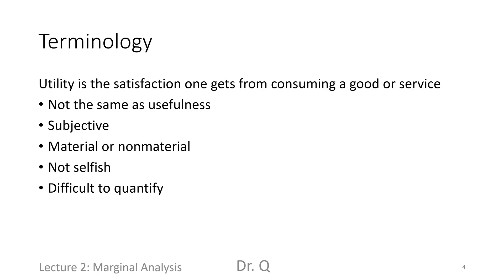Lastly, happiness, satisfaction, or utility is difficult to quantify. Nobody says 'I'm at level 5 of happiness after eating a donut' or 'I'm at level 10 of happiness after watching a game.' We say 'I like a donut' or 'it's a great game.' But economists managed to come up with a measurement unit for happiness, satisfaction, or utility. It's called a 'util.'